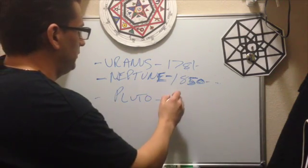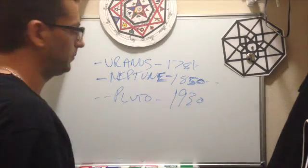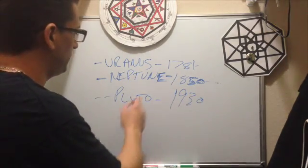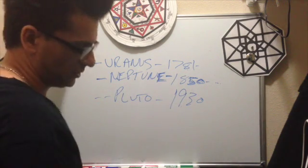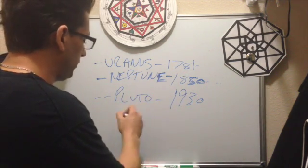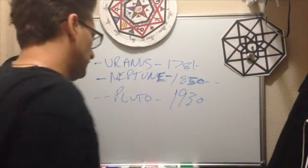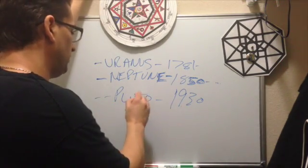Then we have 1930. Pluto. Pluto is discovered. Pluto is the planet of transformation. It's no longer a planet, it's a dwarf planet. This is the planet I'm going to be talking about, Pluto.